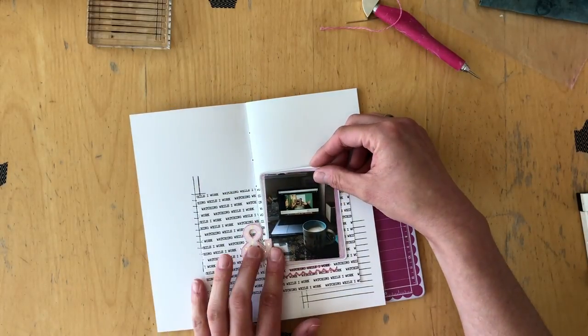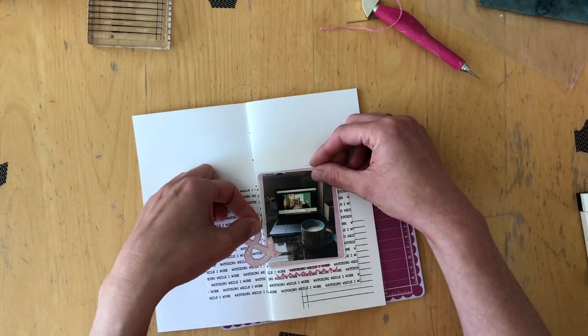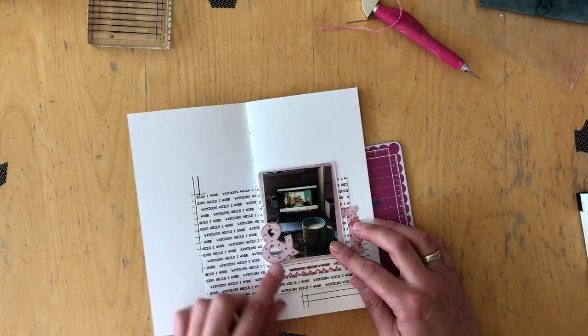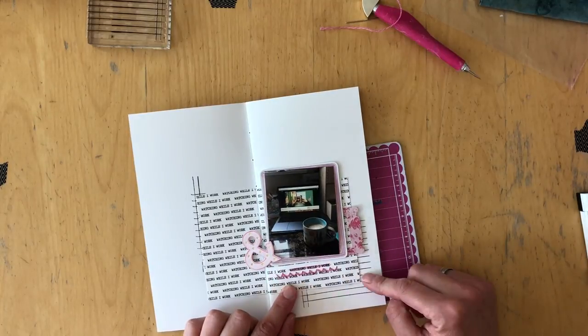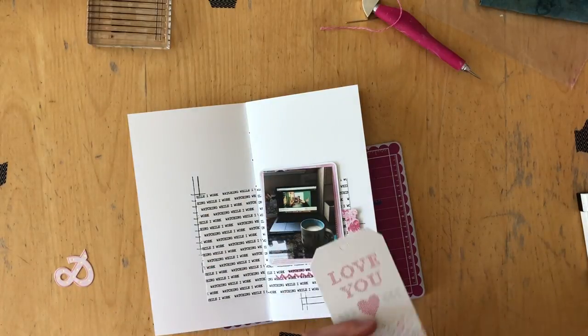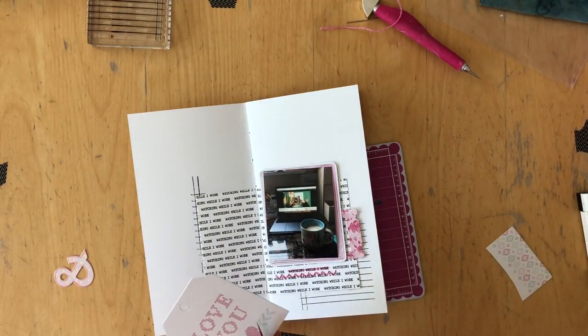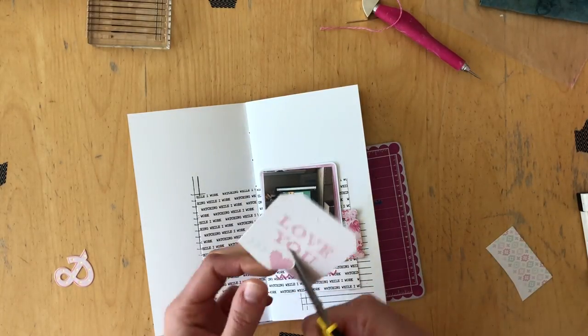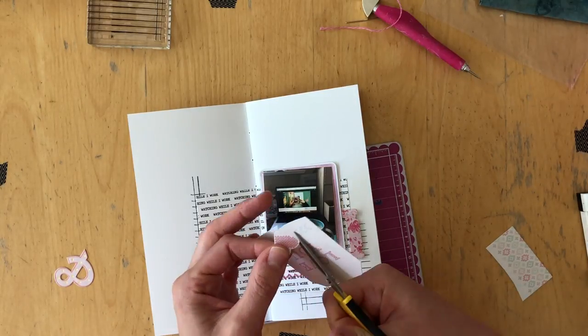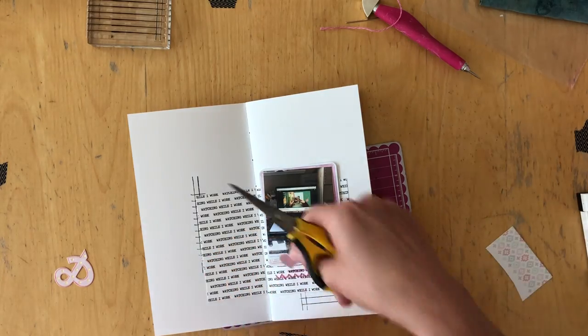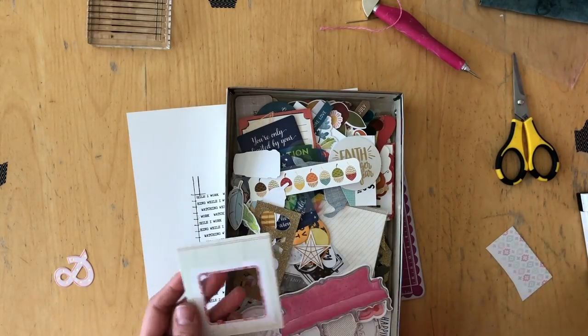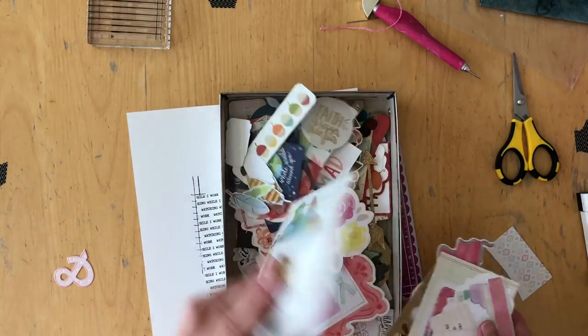That is probably what is the worst part about Traveler's Notebooks. You can't really bulk up the middle, close to the seam, just because it doesn't really work that way. It will bulk up. It won't close anymore. If you have a stapled insert, the pages might fall out. So you really need to be careful with how much bulk you add close to the seam, to the fold.